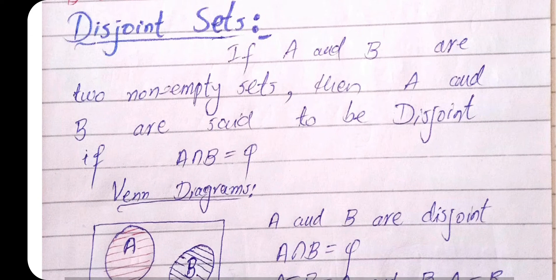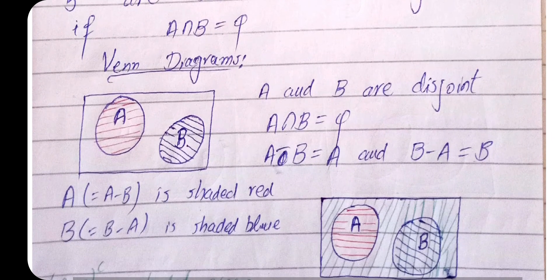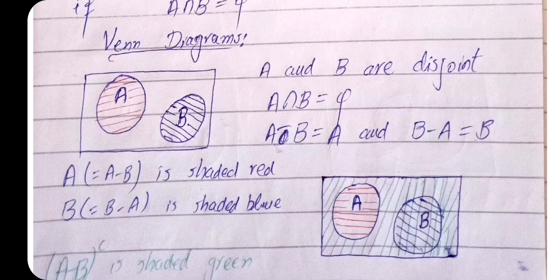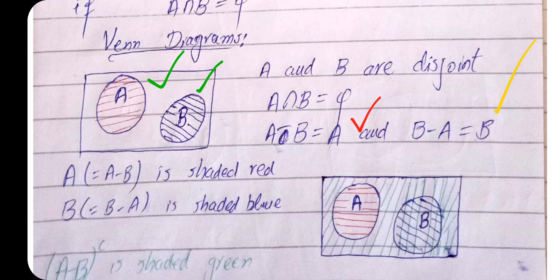Disjoint sets: if A and B are two non-empty sets, then A and B are said to be disjoint if their intersection is empty. Two sets are disjoint if they share no common elements. If A and B are disjoint, then A minus B equals A and B minus A equals B. On the Venn diagram, the two sets are drawn separately with no overlapping region.